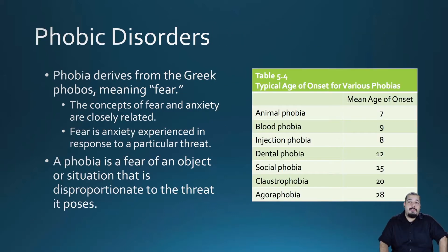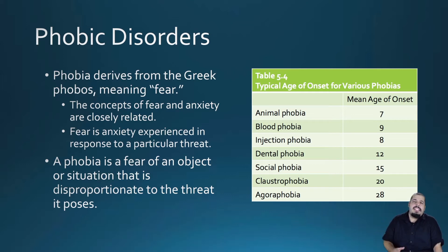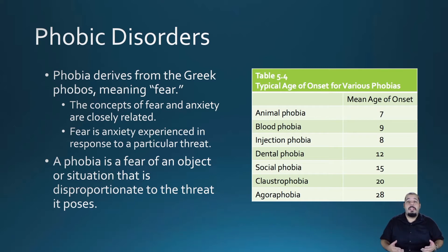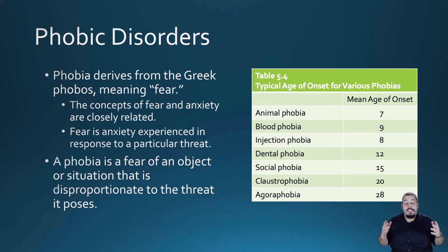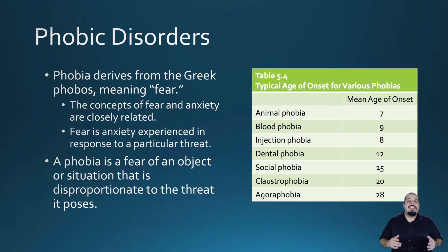Phobic disorder is an excessive, irrational fear of specific objects or situations. Phobias involve a behavioral component — avoidance of the phobic stimulus — in addition to physical and cognitive features. Anxiety and phobia are closely related in that anxiety and possibly panic attacks are experienced in response to a particular threat. There are many phobias, including fear of insects (anomophobia), fear of the sun (heliophobia), fear of walking (ambulophobia), and even fear of sexual intercourse (genophobia).